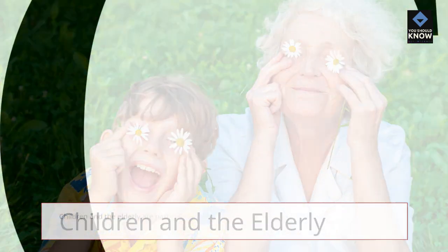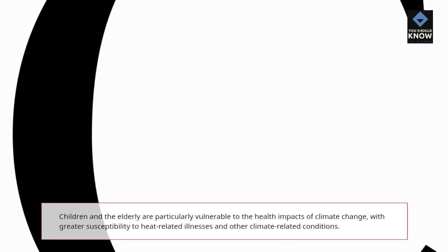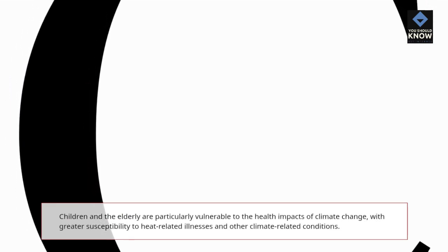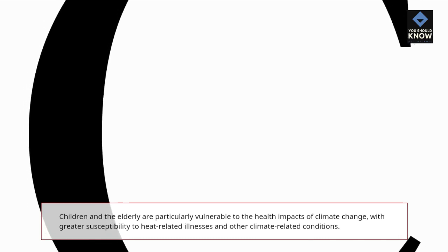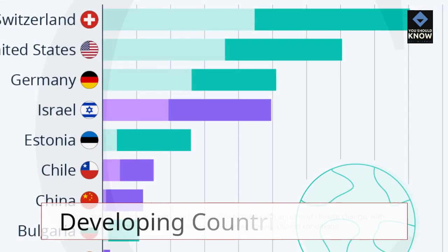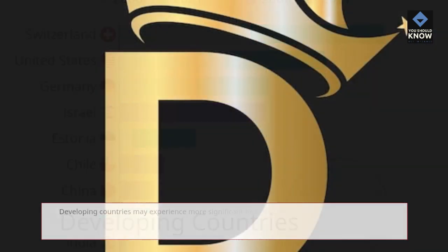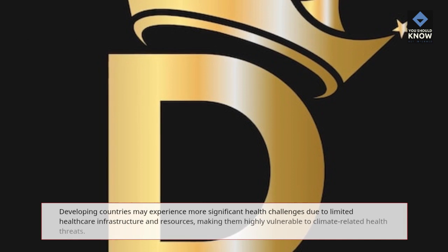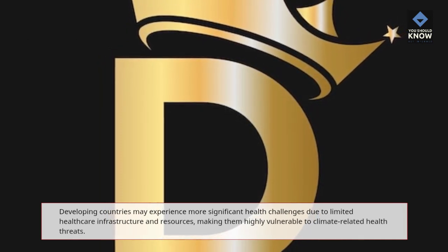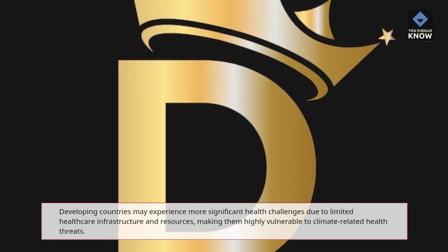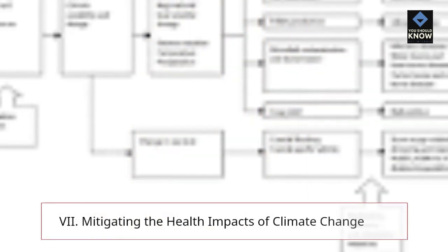Children and the elderly are particularly vulnerable to the health impacts of climate change, with greater susceptibility to heat-related illnesses and other climate-related conditions. Developing countries may experience more significant health challenges due to limited health care infrastructure and resources, making them highly vulnerable to climate-related health threats.